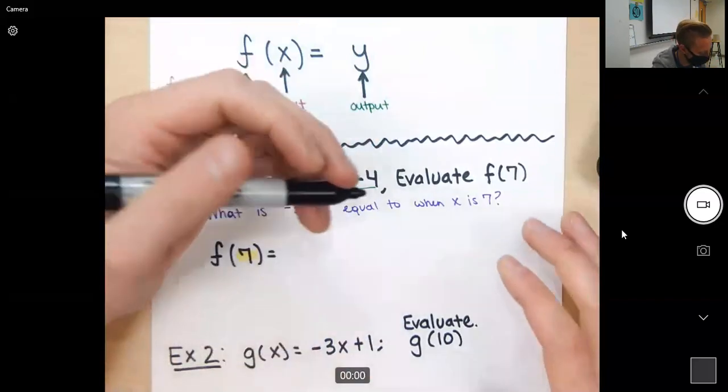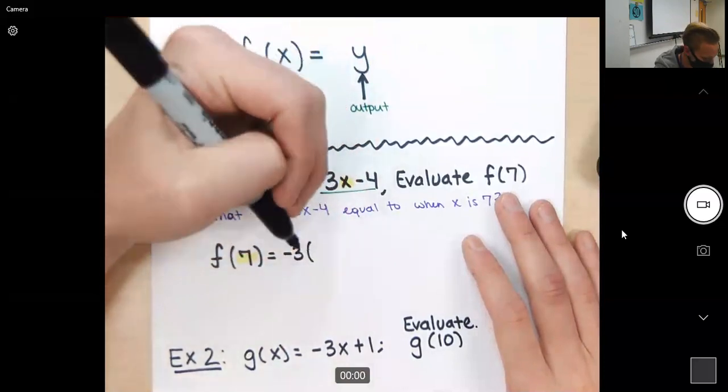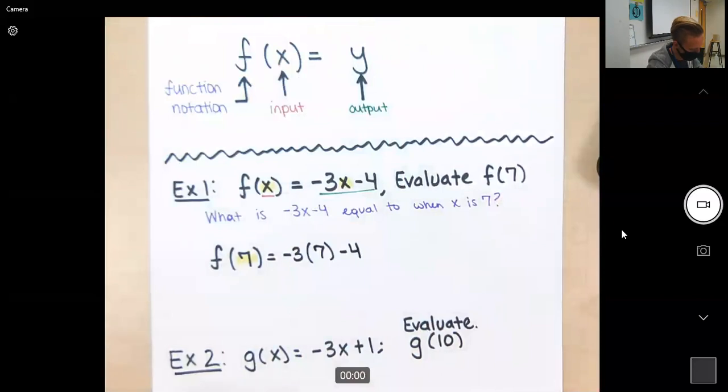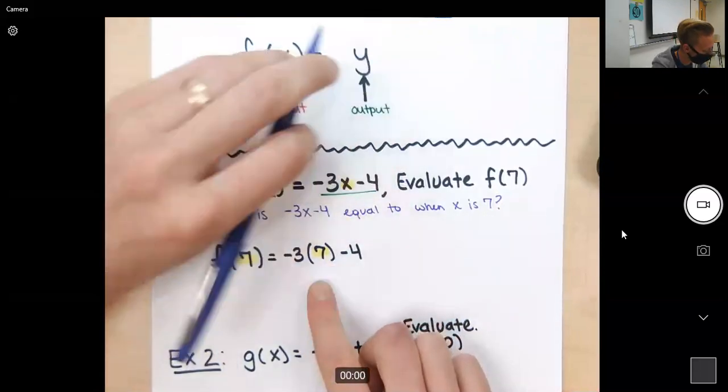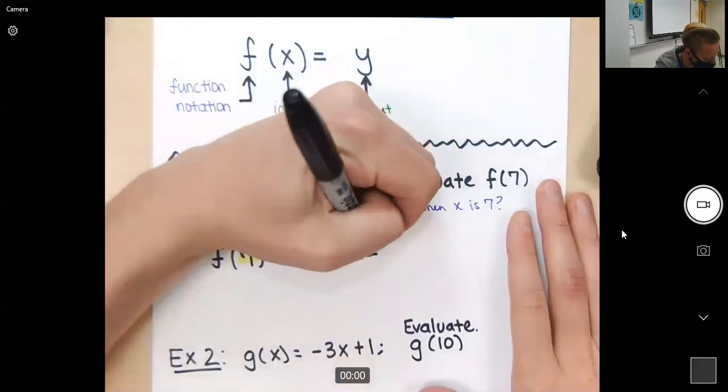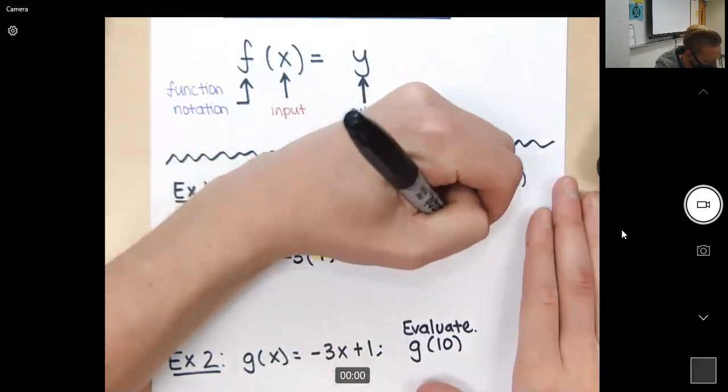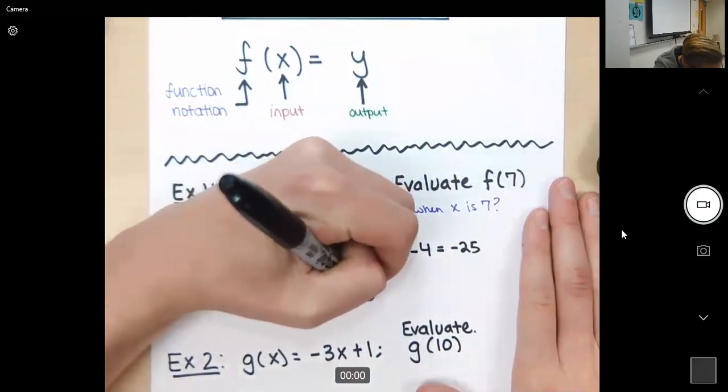So this is what this would look like. We would have negative 3 times, not x, but 7 minus 4. Just like that. And then you just tell me what number that is. So negative 3 times 7 is equal to negative 21 minus 4 is negative 25. f(7) is equal to negative 25.